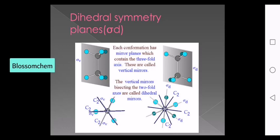Sigma v and sigma d differ in that sigma d bisects the twofold axis. This is the dihedral plane sigma d.